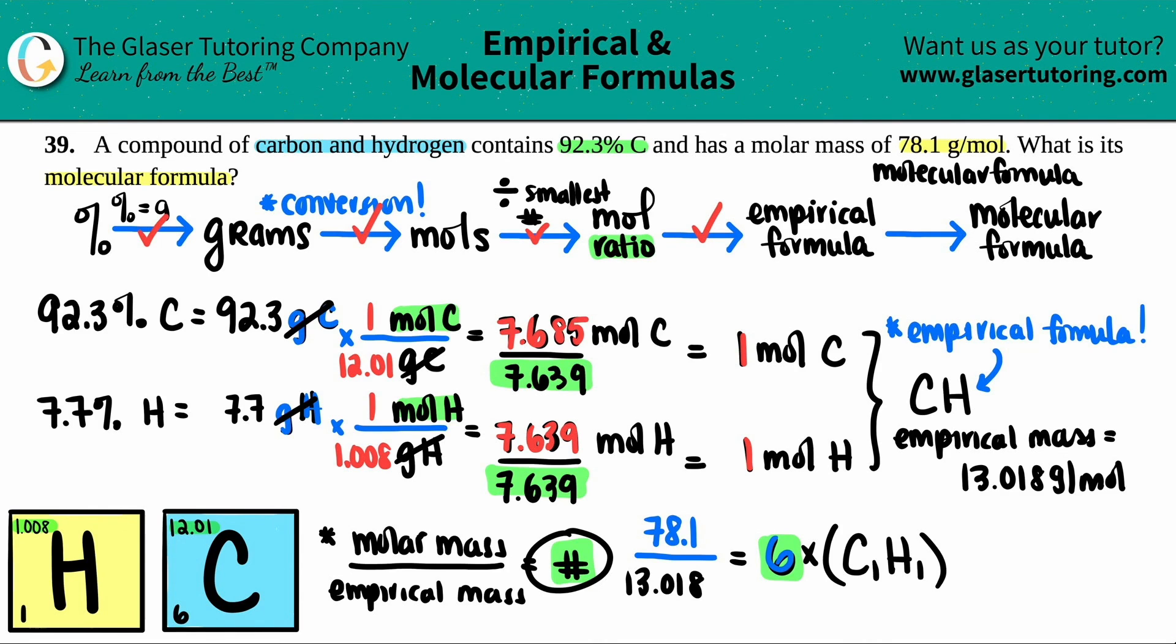Now all you have to do is multiply those subscripts by that number. And in this case, it's six. So one times six, and then one times six again. So what do we get? We get C6H6. One times six is six, and one times six is six. So C6H6. And that is your molecular formula. So empirical formula was just CH. But then since we did that formula and we got a six, C6H6. We now know that the molecular formula is C6H6. And that is your final answer.